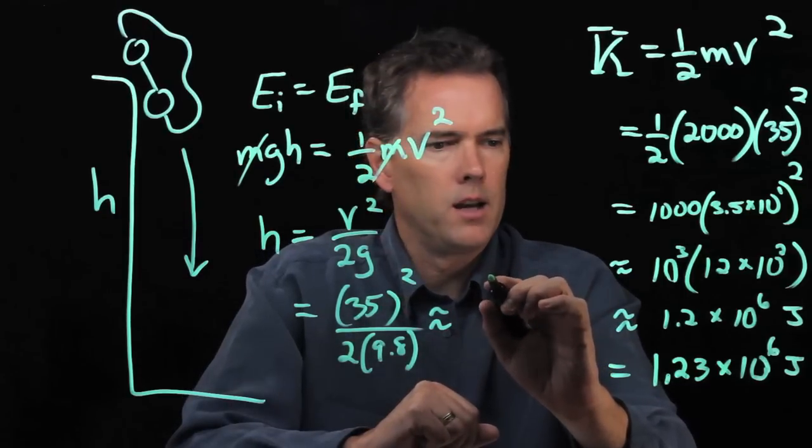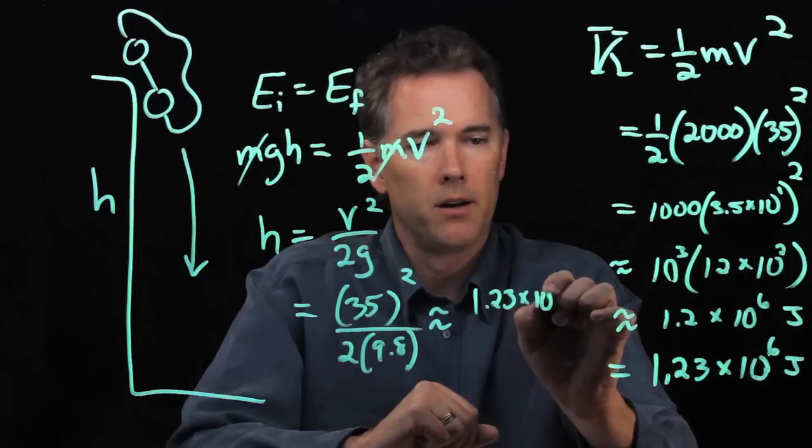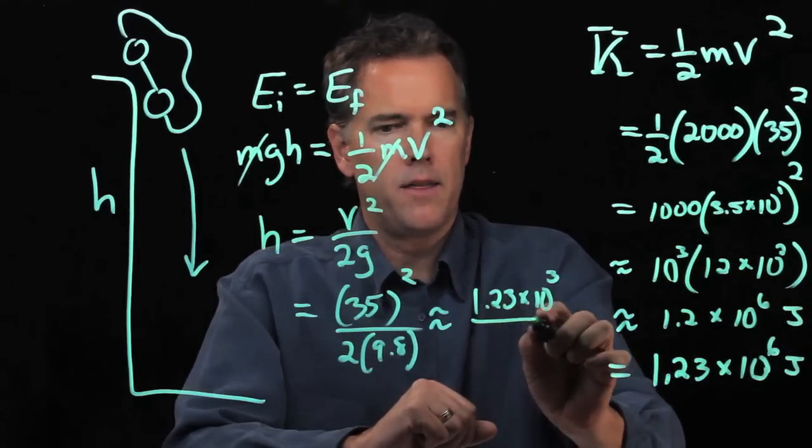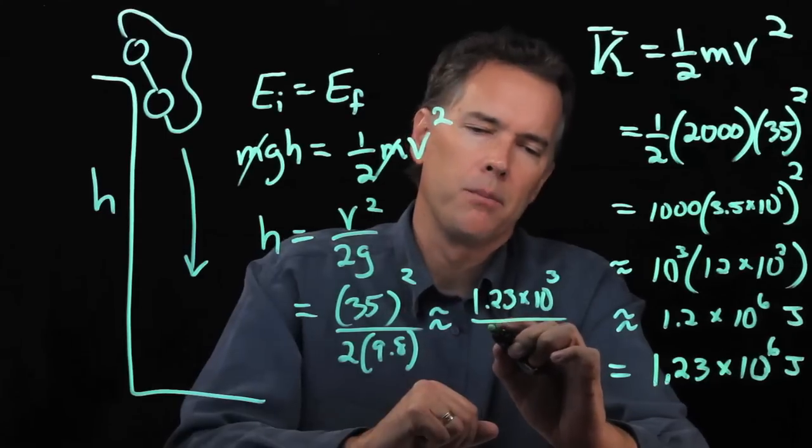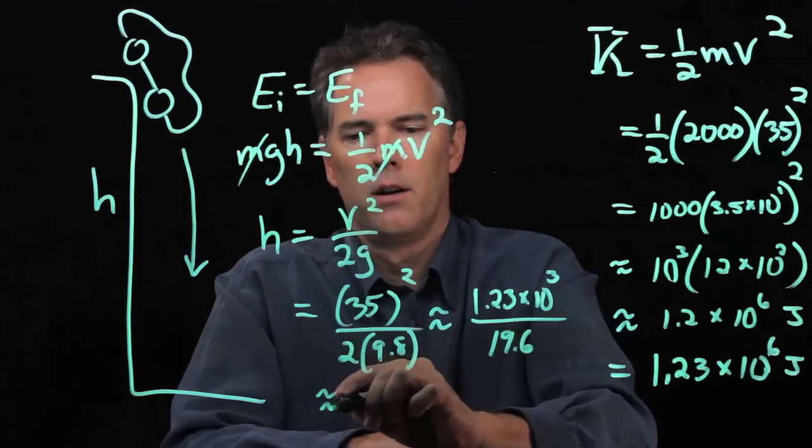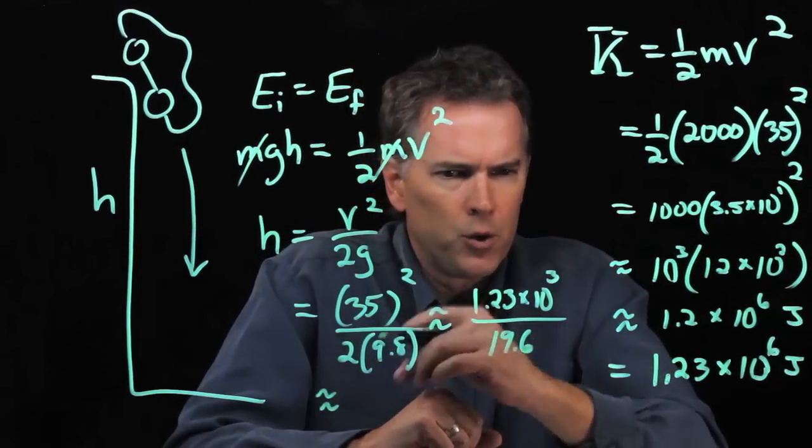So that is 1.23 times 10 to the 3. That's what that number is right there. And then we're dividing by 2 times 9.8 which is 19.6. What does this work out to be? Well that's 1 over 20 roughly. A little bit more.